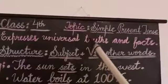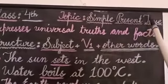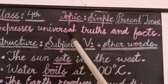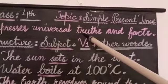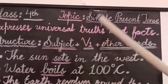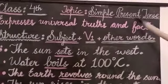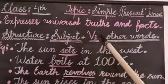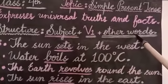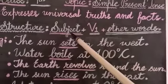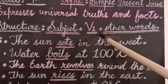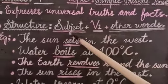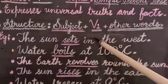Let's recap our today's lesson. The simple present tense is used to express universal truths — those with universal validity and universal acceptance — as well as general facts. The structure is: subject plus first form of the verb plus other words. With a singular subject, use the singular verb; with a plural subject, use the plural verb; and with 'I' or 'you', use the plural verb.